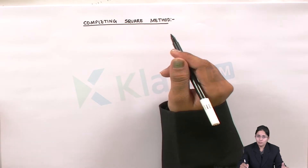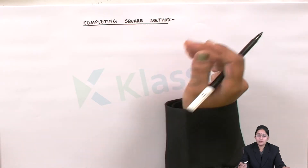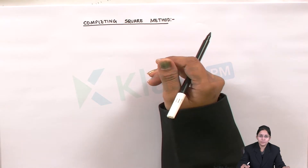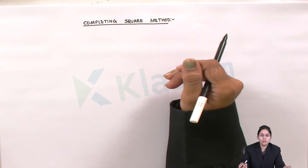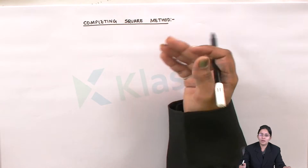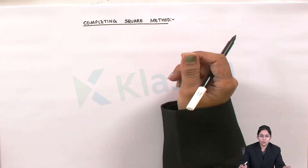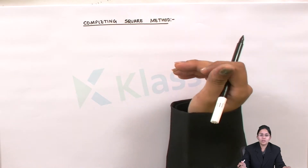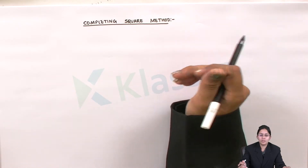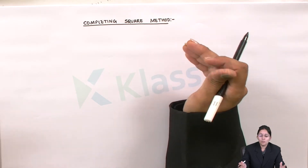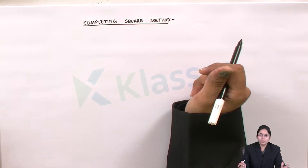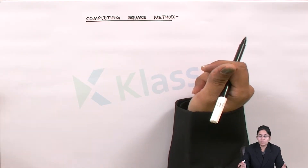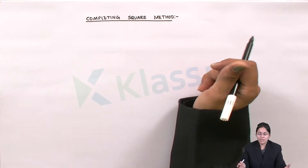First we read the word problem and deduced it into the quadratic equation structure having the coefficient of x-squared, x, and a constant. Then we factorized it and found the roots. Now we are going to see a new method known as completing square method. Let us try to see certain examples through which we can easily understand the method.